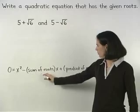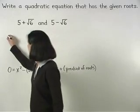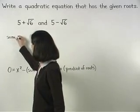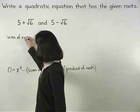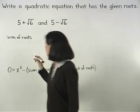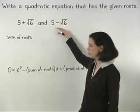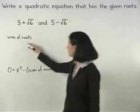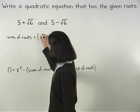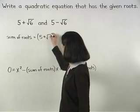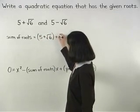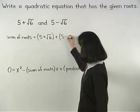To find the sum of the roots, since the given roots are 5 plus root 6 and 5 minus root 6, the sum of the roots is 5 plus root 6 plus 5 minus root 6.